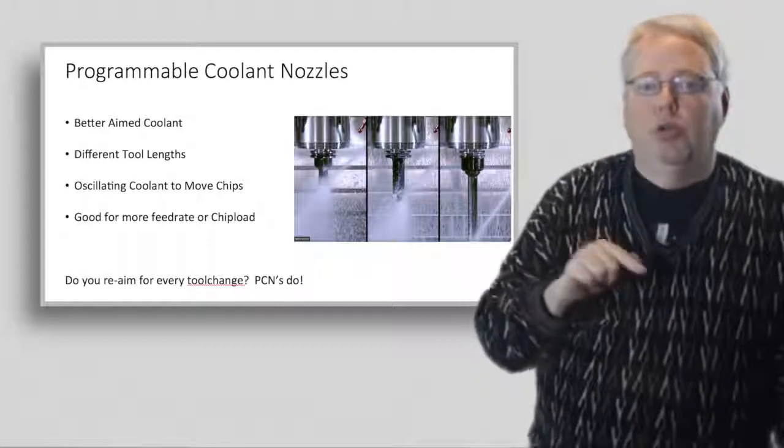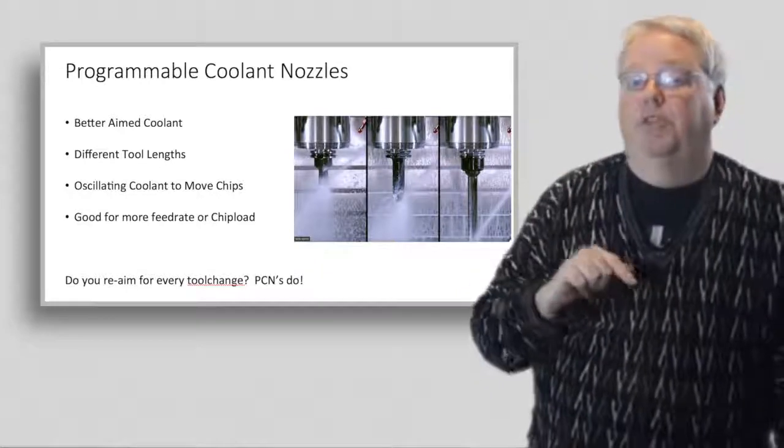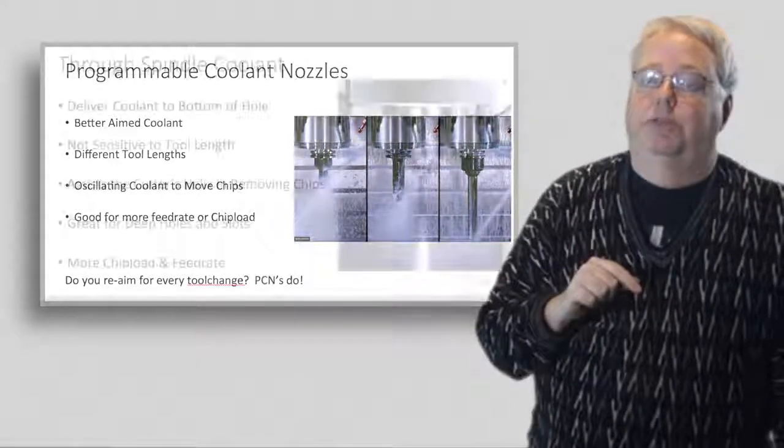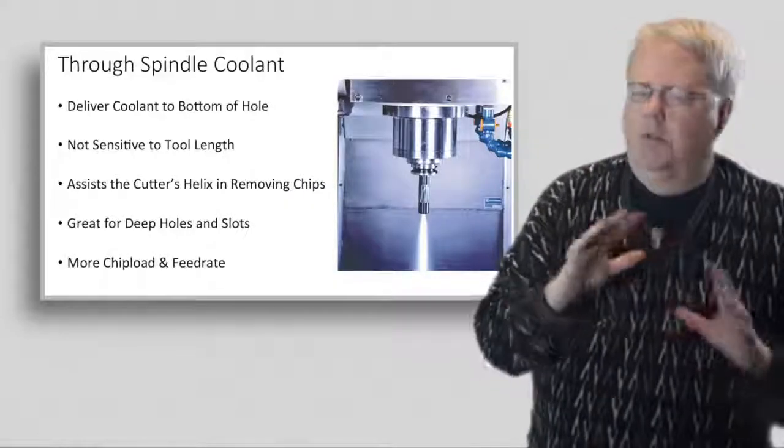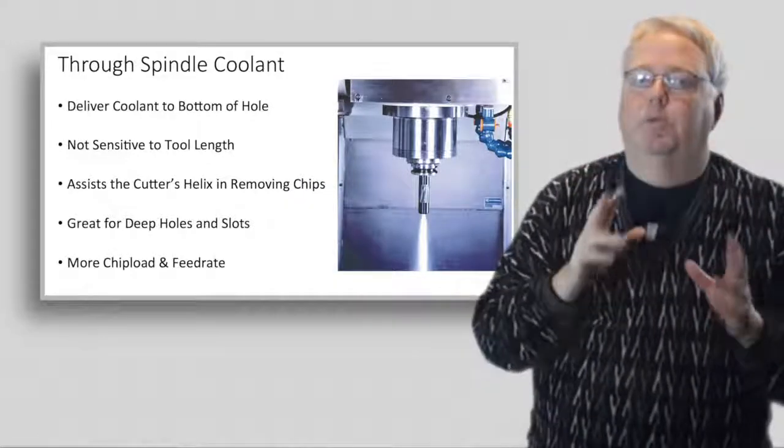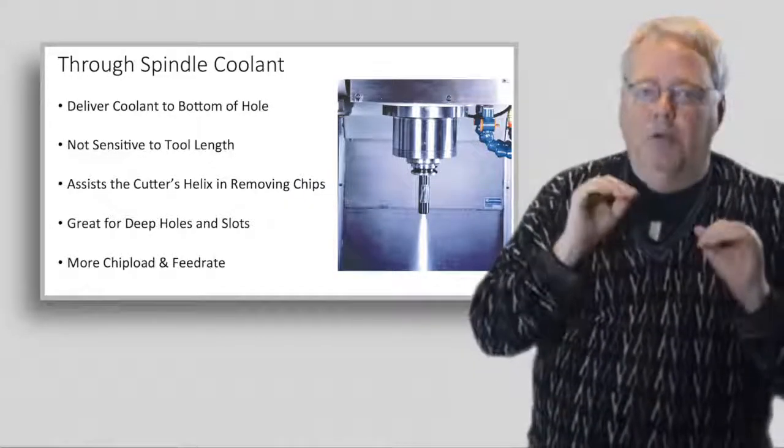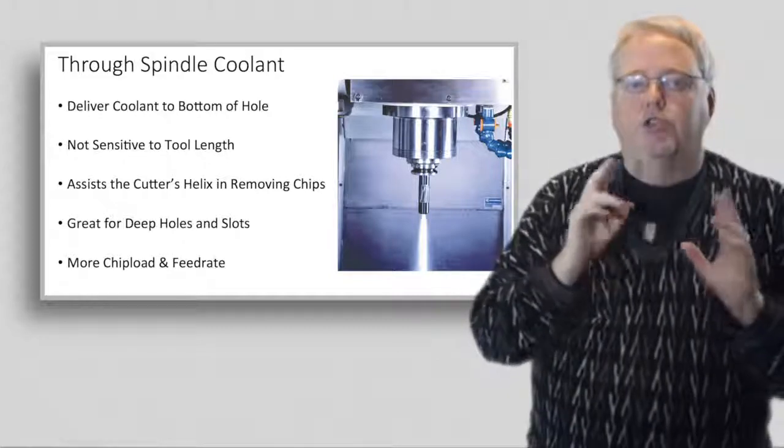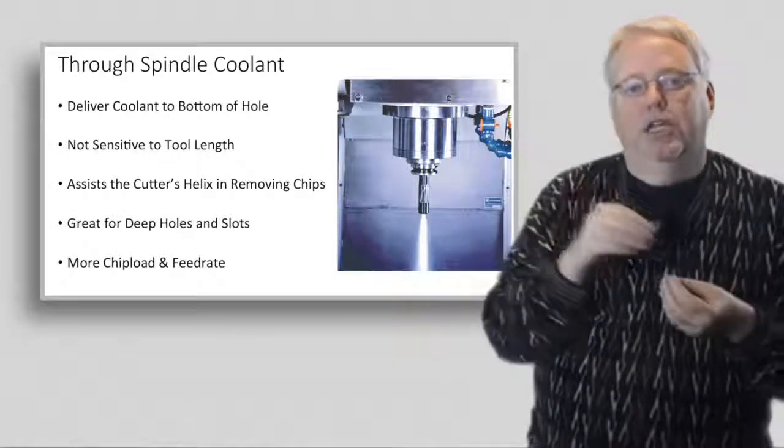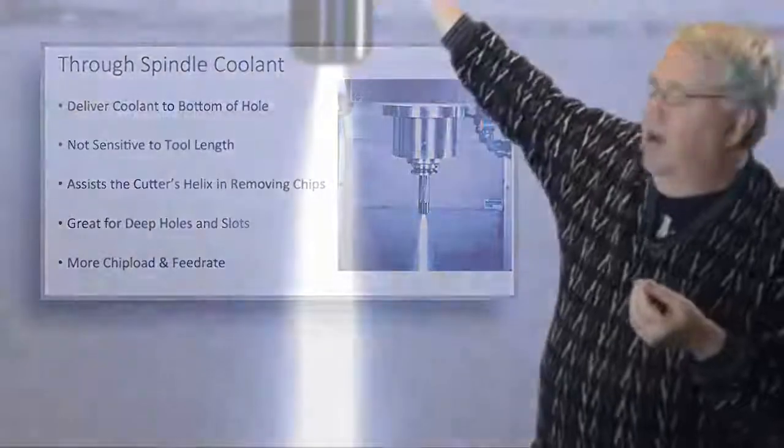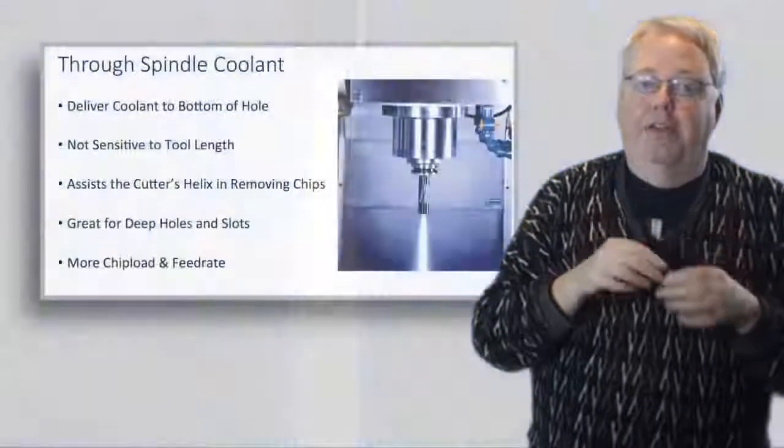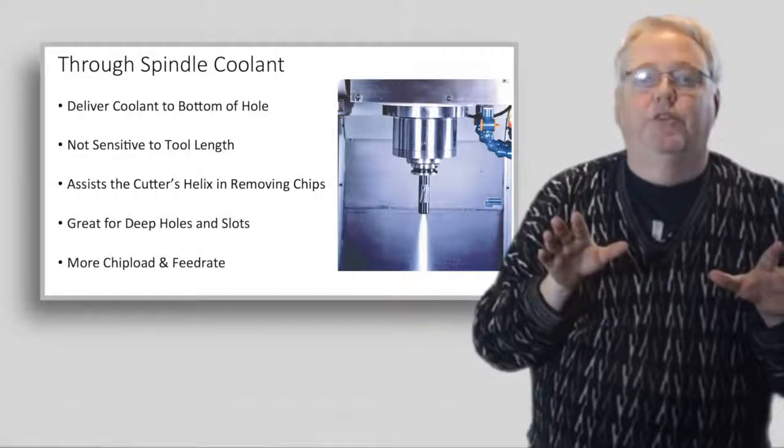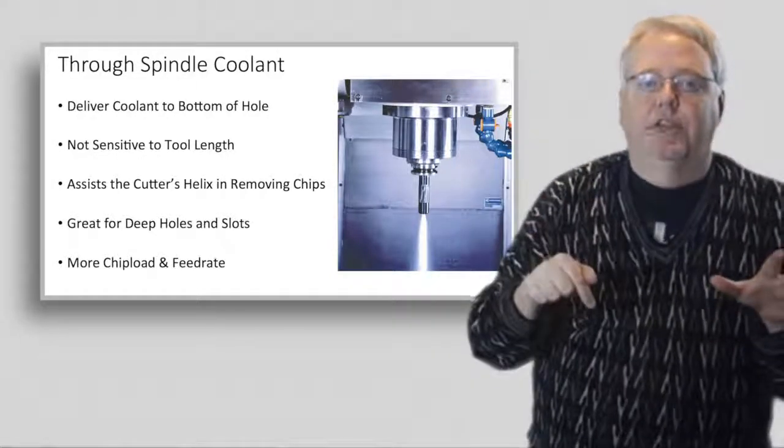Through spindle coolant. Oh, even better than a programmable coolant nozzle. With through spindle coolant, the coolant transfers through passages in the spindle and passages inside the tool to come out right at the end of the tool. That's where coolant needs the most help, and it's not sensitive to tooling because it's already feeding to the end of the tool.